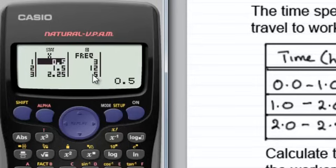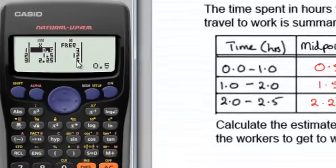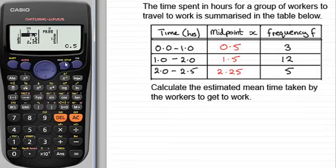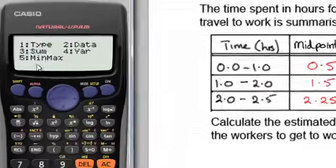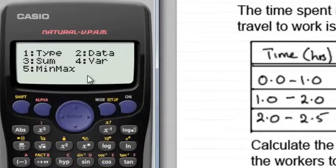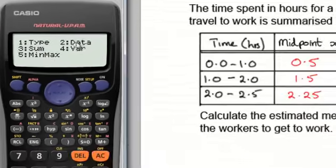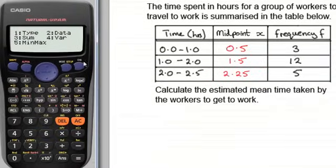So we need to work out then the estimated mean. And to do this we just clear this away, press AC, and we go to the stats function here. So to do that we have to press shift and then the 1 to operate it. And you're presented then with this menu here. I'll take you through a couple of these items in a moment.